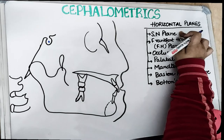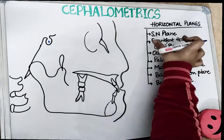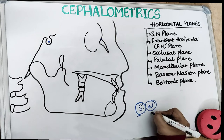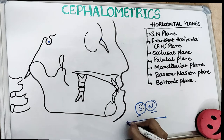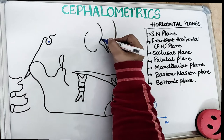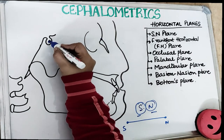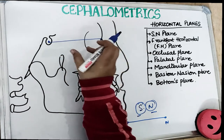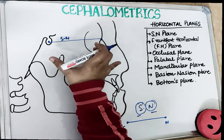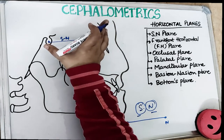The first plane is the SN plane. As I've been telling you, everything is in the name — break the name and you get everything about it. SN plane breaks into S and N: the first point is S and the second point is N. It is a line which connects point S to point N. S point is the center of the sella turcica, and N point is the anterior point on the frontonasal suture — the nasion point. Connecting these two points gives us our SN plane, which is a horizontal plane representing the anterior cranial base.